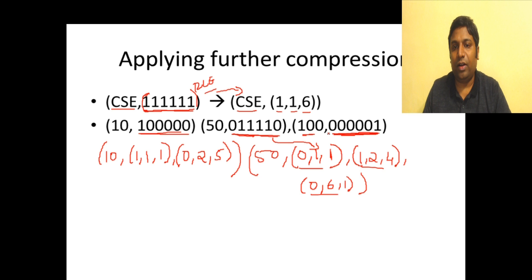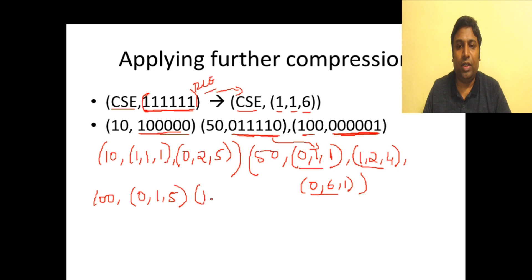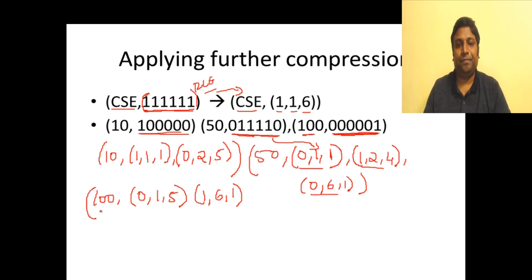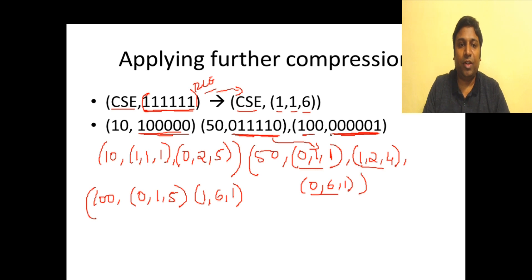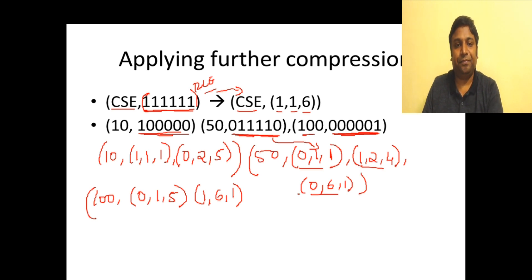For value 100: 0 starts at position one and repeats five times; 1 starts at position six and repeats once. So we have applied a two-stage compression: first bitmap encoding, then run-length encoding on top, to further reduce the storage required.